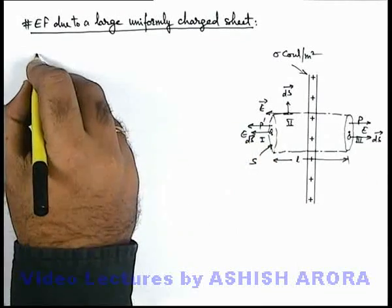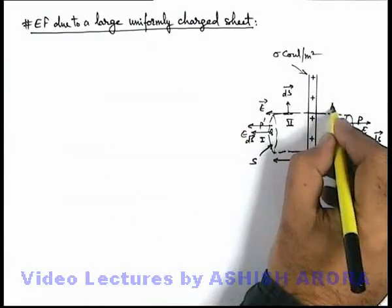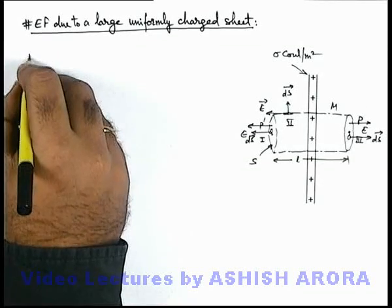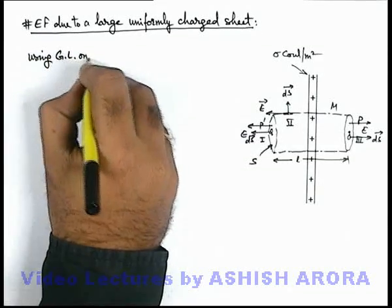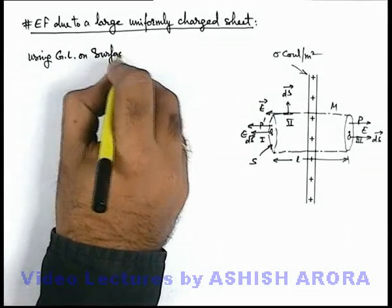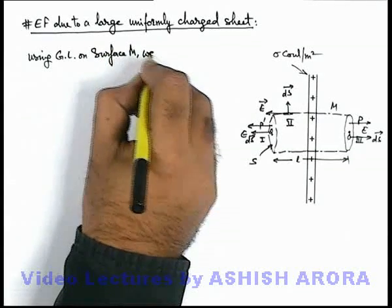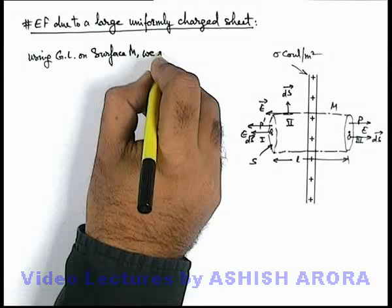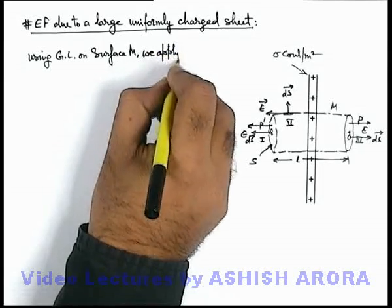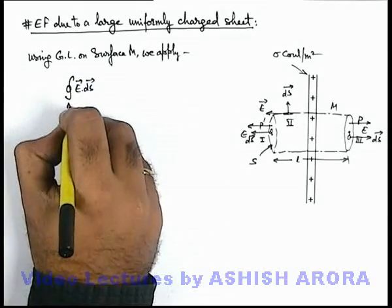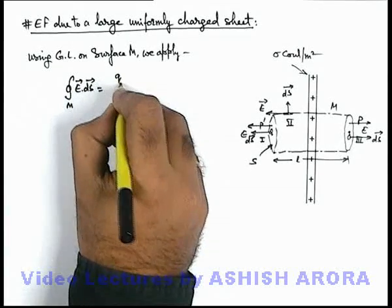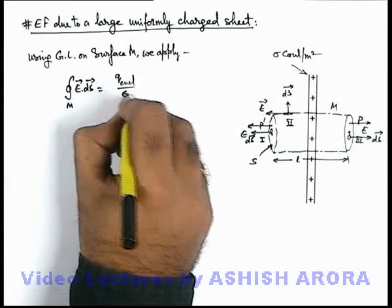So if we apply Gauss's Law on this surface which we can name as M, so we can say using Gauss's Law on surface M, we apply integration of E dot dS for this surface M is equal to the net enclosed charge by epsilon not.